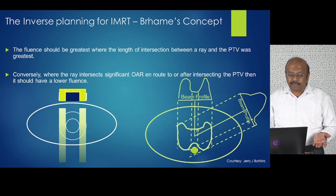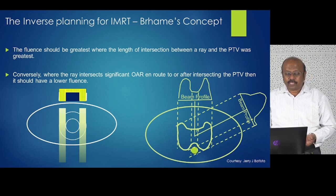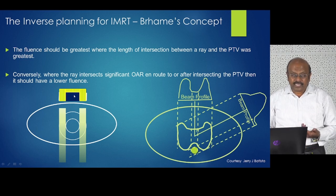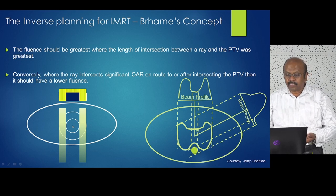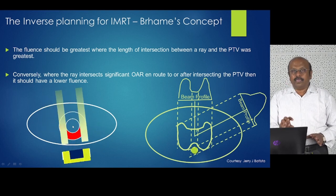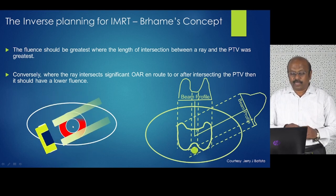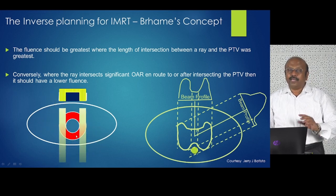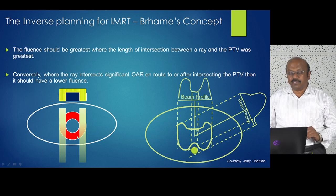On the left I have given a small explanation: suppose you want to avoid this central area and treat this circle. What you have to do is have a beam where you close the central portion exactly to the size and do a full rotation. It will create a fluence around the critical organ. You want to avoid this and irradiate the surrounding ring — this is a good way of doing it.